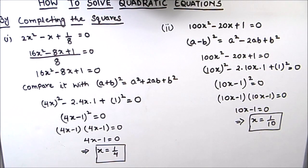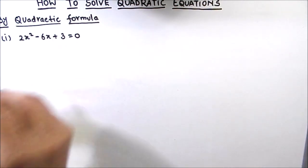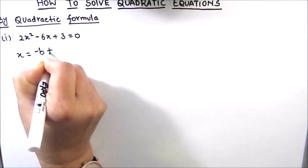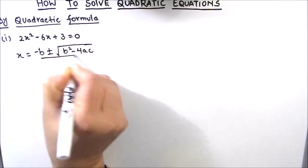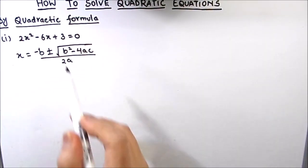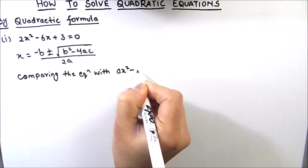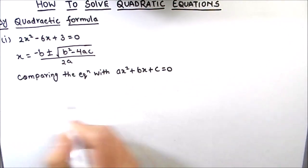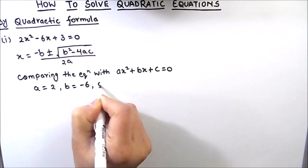Now we will solve examples using the last method: the quadratic formula. Our first equation is 2x squared minus 6x plus 3 equals 0. The quadratic formula is x equals negative b plus or minus square root of b squared minus 4ac, divided by 2a. We compare with the standard quadratic equation ax squared plus bx plus c equals 0, giving a equals 2, b equals negative 6, and c equals 3.